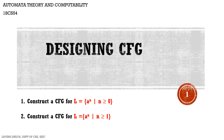Hello students. In this video we shall see how we can design context-free grammars for a given question. We will take a couple of examples and construct CFGs for the same. The two examples are: constructing a CFG for a language L equal to A to the power N where N is greater than or equal to 0, and a slight modification where N is greater than or equal to 1.